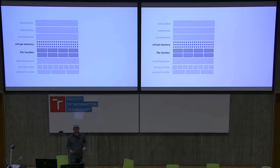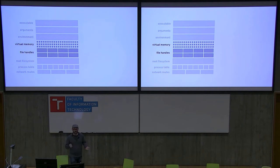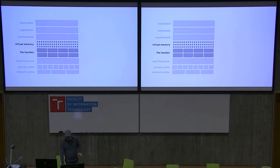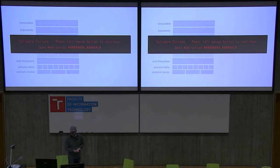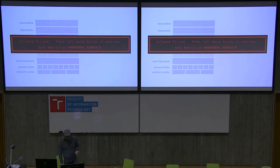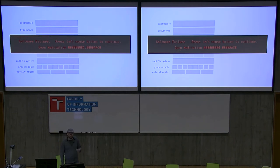Each process also has a private view of a certain portion of physical memory on your computer. Your CPU and operating system cooperate to give each process a virtual view of this part of memory. This means that if I have a given address in one program, it's not going to point to the same location in memory as that same address in another program. This is really important because it means that processes can't interfere with each other's memory — they have no way to refer to it.